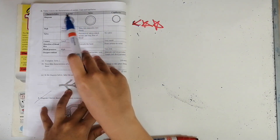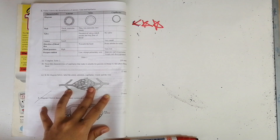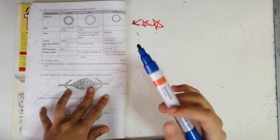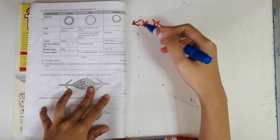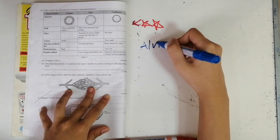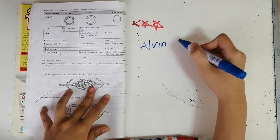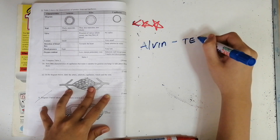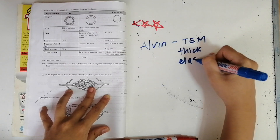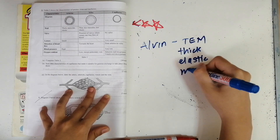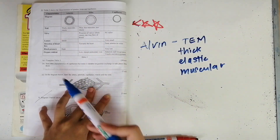For arteries, the wall is thick, elastic, and muscular. Just imagine a friend named Alvin whose name starts with A — he is a muscular guy. Remember TEM: the walls are Thick, Elastic, and Muscular. That's how I remember it.